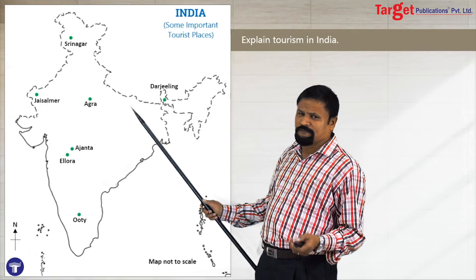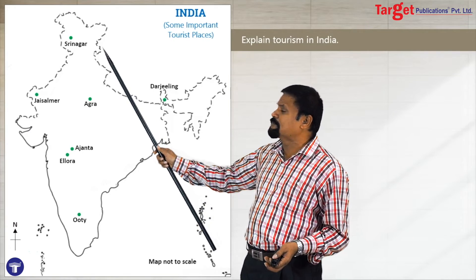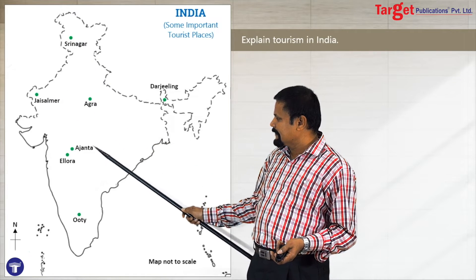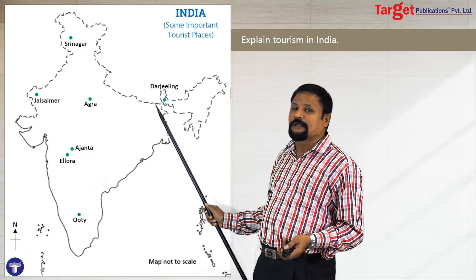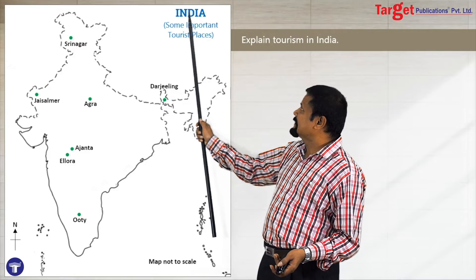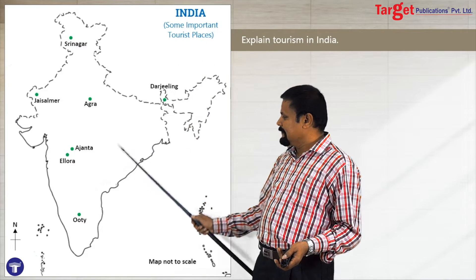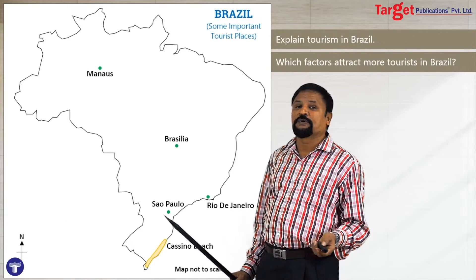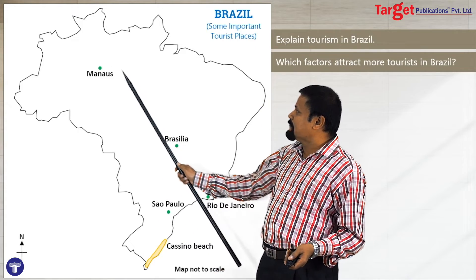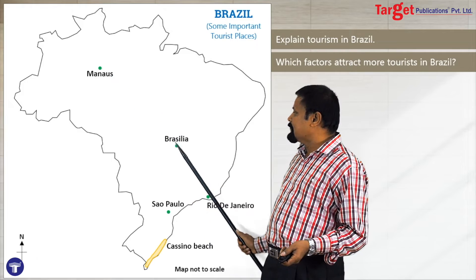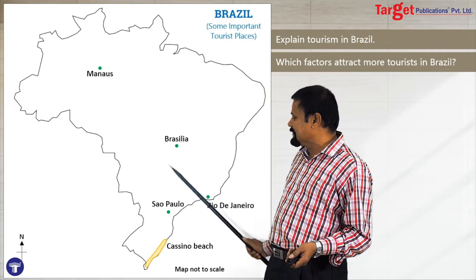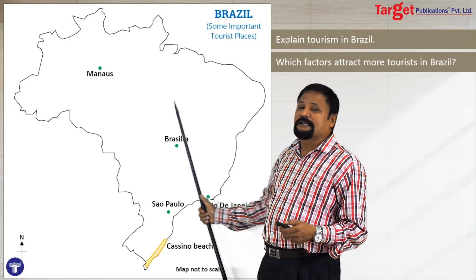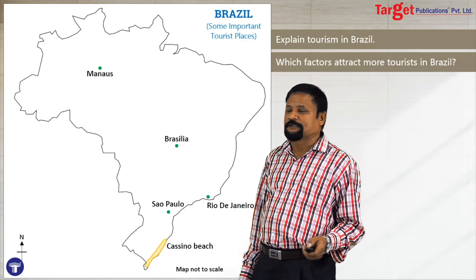For tourist places, mark some famous locations — not all, but some. For India: Srinagar, Jaisalmer in Rajasthan, Agra, Ajanta, Ellora, Ooty, and Darjeeling. Don't forget to write the title, subtitle, direction, and map not to scale. For Brazil: Manaus port is a famous tourist place, Brasília the new capital is another, then São Paulo, Rio de Janeiro, and Cassino Beach.